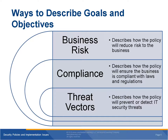There are different ways to describe policy goals and objectives. The value of the policy will often be judged by how well you describe those goals and objectives — the more persuasive the descriptions, the more people will value the policy. One effective technique is to describe goals and objectives in three ways: business risk (how the policy will reduce risk to the business), compliance (how the policy will ensure the business is compliant with laws and regulations), and threat vectors (how the policy will prevent or detect IT security threats).